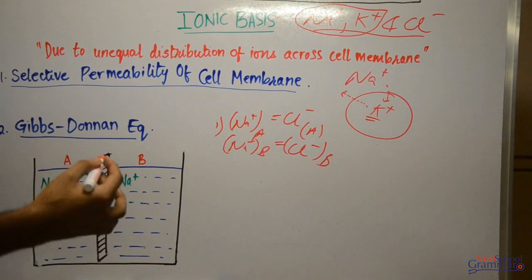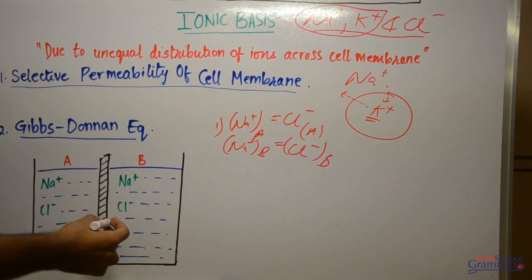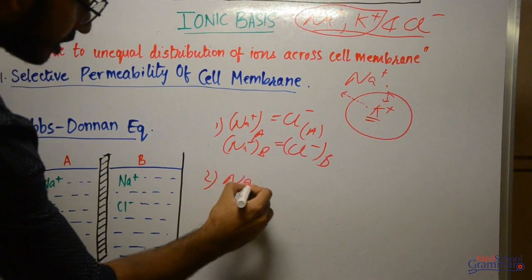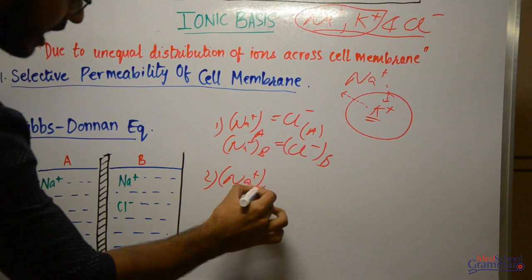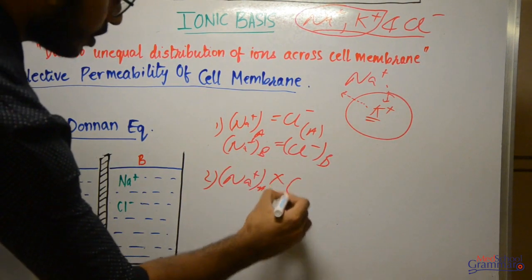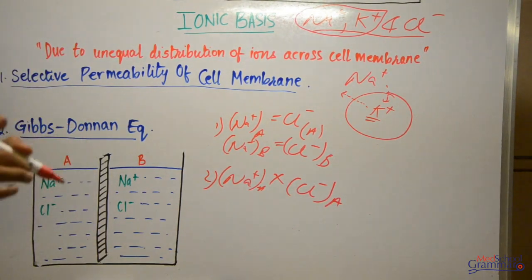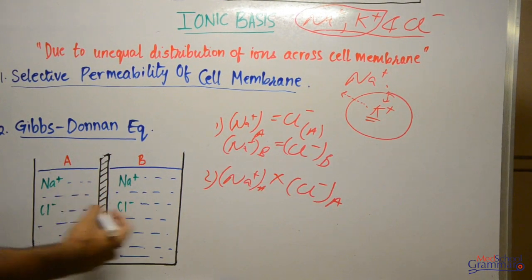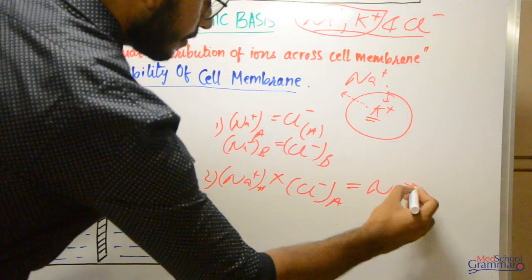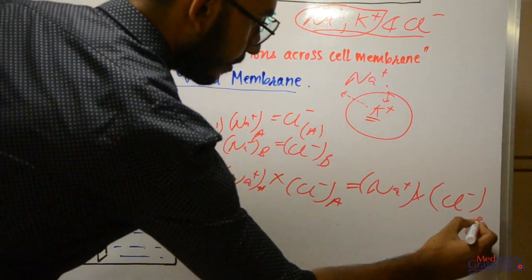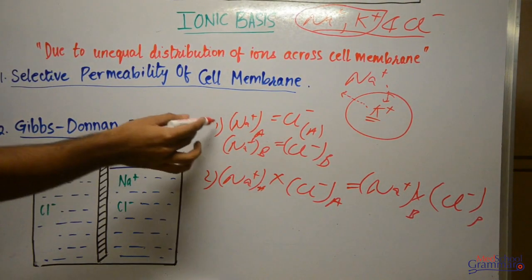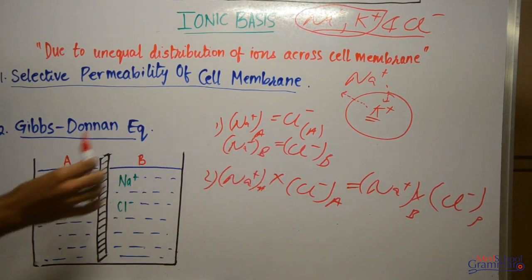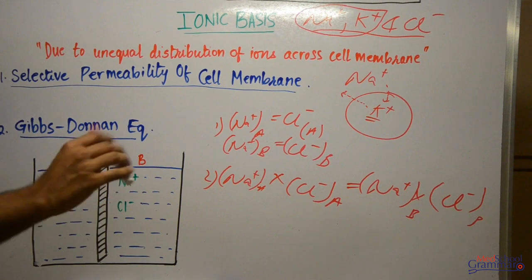The second point of Gibbs-Donnan equilibrium states that at equilibrium, the product of diffusible ions on both sides is the same. So sodium into chloride on side A will be equal to sodium into chloride on side B.